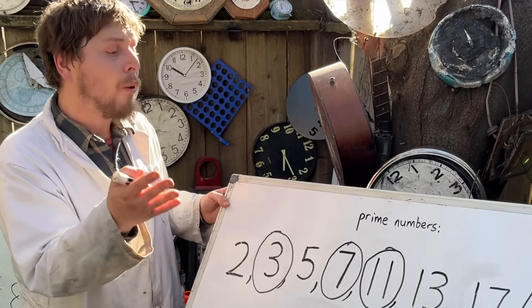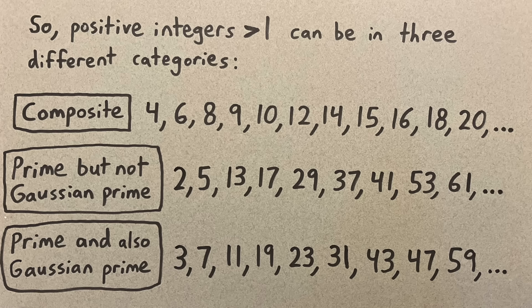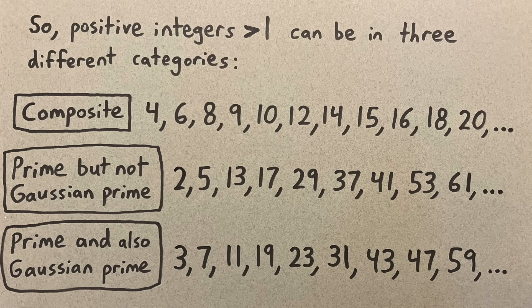even if we allow all complex numbers as possibilities. And it makes you wonder, what's the rule? Which regular primes are Gaussian primes also?